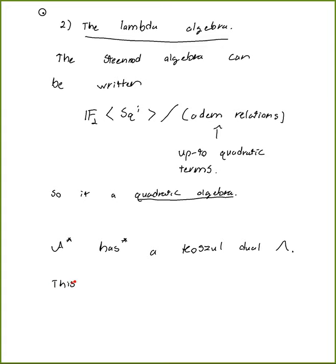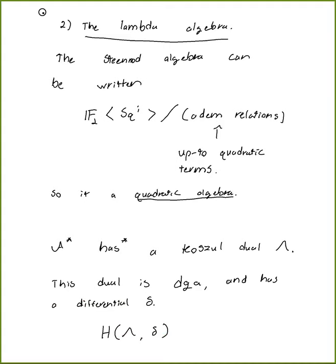The Koszul dual Lambda is a differential graded algebra and therefore has a differential. The amazing property is that if you take the homology of this DGA with respect to this differential, you get the E2 page of the Adams spectral sequence — that is, Ext over A-star of F2 with F2. Priddy developed explicit formulas for the differential using the coefficients of the linear part of the Adem relations.